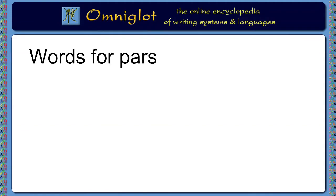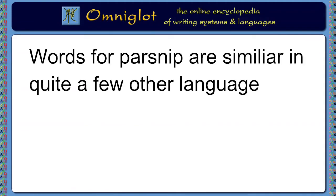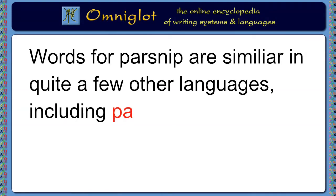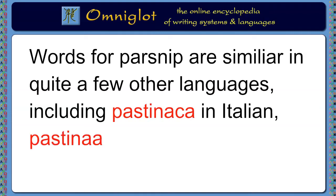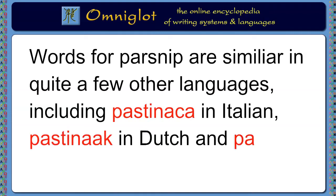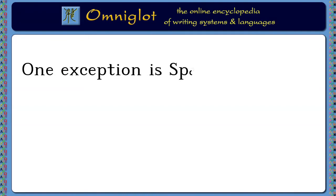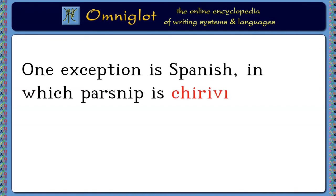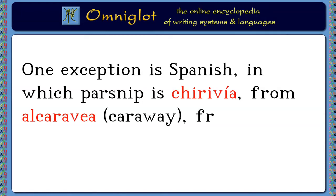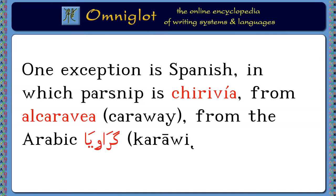Words for parsnip are similar in quite a few other languages, including pastinaca in Italian, pastinaak in Dutch, and panais in French. One exception is Spanish, in which parsnip is chirivía, which comes from the word alcaravea, or caraway, from the Arabic word karawiya, which means caraway.